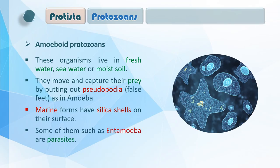Protozoa की पहली category है Amoeboid Protozoas, जिसमें Amoeba को include किया गया है। ये organisms fresh water, sea water, और moist soil में पाए जाते हैं। आपने सुना होगा कि Amoeba के पास pseudopodia होते हैं — वो form कर सकता है। Pseudo means false, pods means feet — यानी false feet। ये pseudopodia form करके अपना food capture कर लेता है — इसको phagocytosis कहते हैं। They move and capture prey by putting out pseudopodia, as in Amoeba।